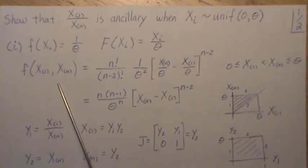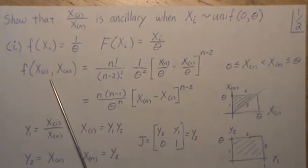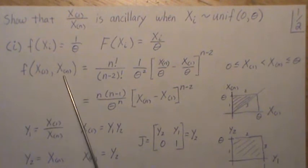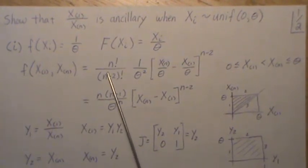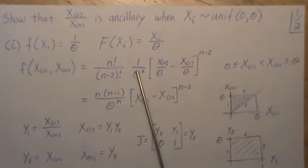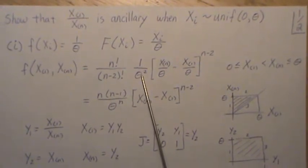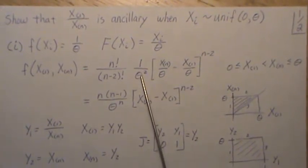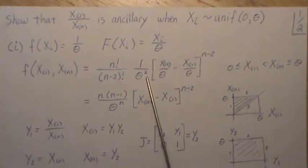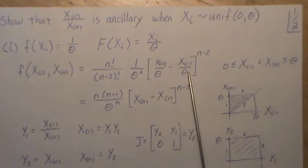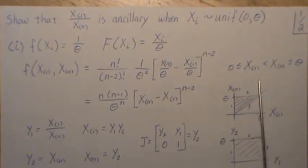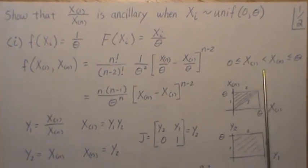The joint order statistic, f of X1 and f of Xn, is this. So this is the permutations out front. This is the density of f of X1 times f of Xn. That's why there's a square there. And then this is f of Xn minus f of X1. And it's quantity squared. And we have this as the support.